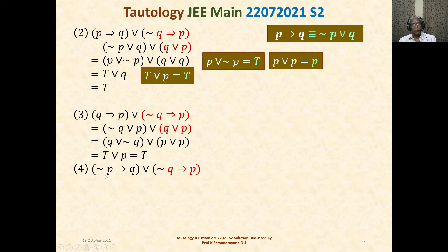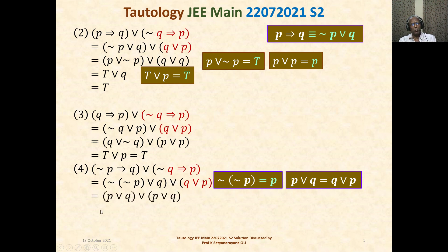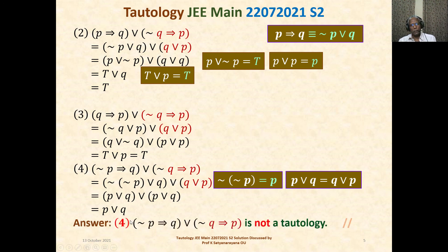For the fourth expression, we have negation of negation of p or q, combined with q or p. Negation of negation of p is p, and q or p written as p or q by commutative law. So p or q or p or q simplifies to p or q. This is not always true — it is not a tautology, because it does not give truth value T for all inputs. Therefore this Boolean expression is not a tautology.